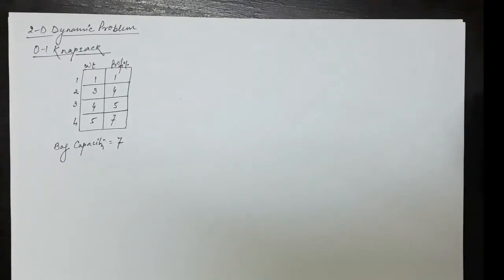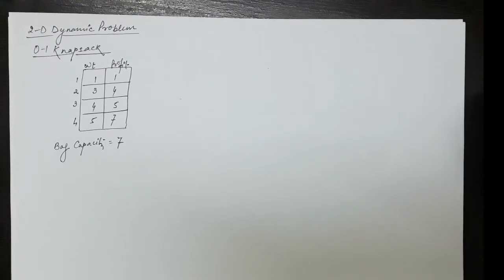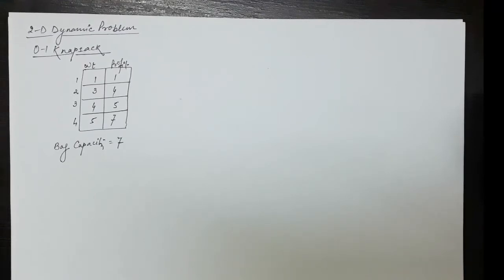In this lecture we are going to discuss 2D dynamic programming problems. The 2D dynamic programming means we will be taking a 2D memoization table for solving the problems. Earlier we took examples of 1D dynamic programming problems where we used only a single dimension array for storing previous results. Now in this lecture we will take examples using 2D arrays, for example the 01 knapsack problem.